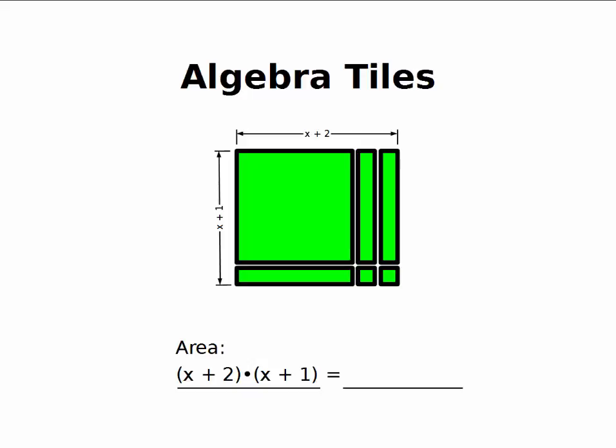If I look at the pieces, I've got 1 x squared, 1, 2, 3 x's, and 1, 2 ones. So that's x squared plus 3x plus 2. These are equivalent ways of writing the area.